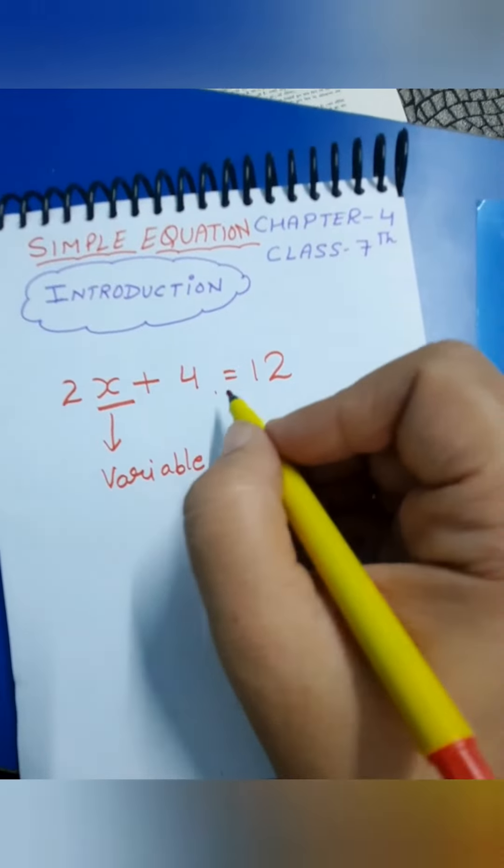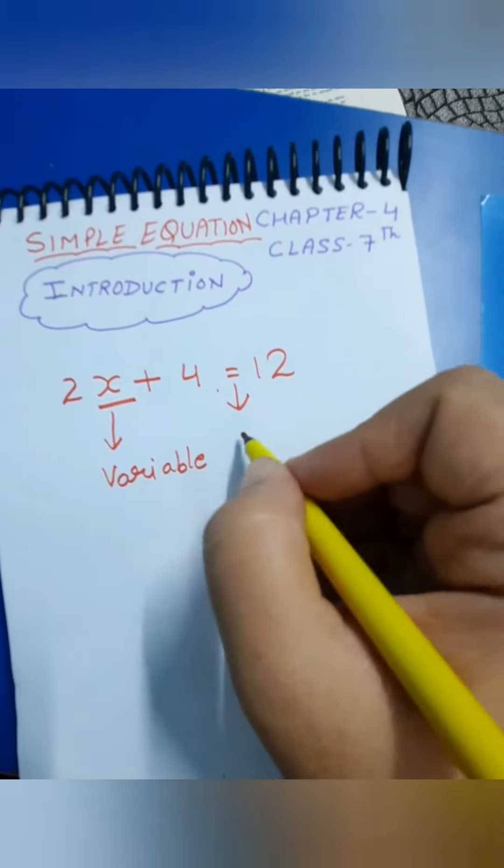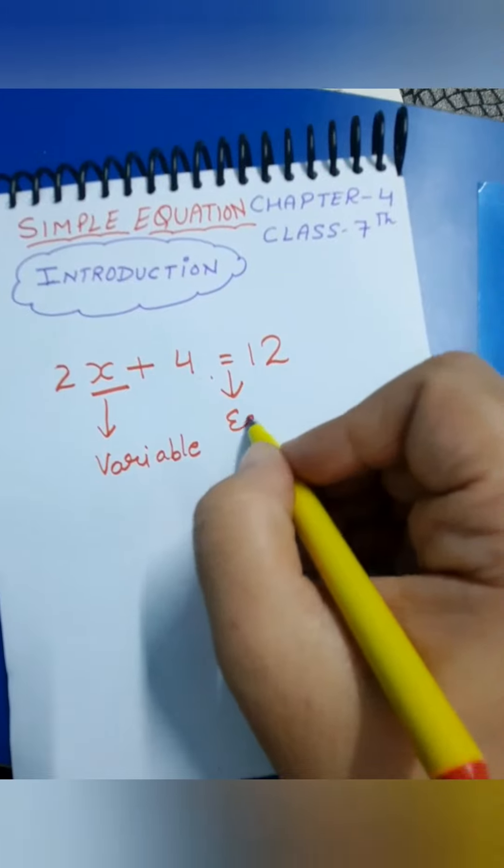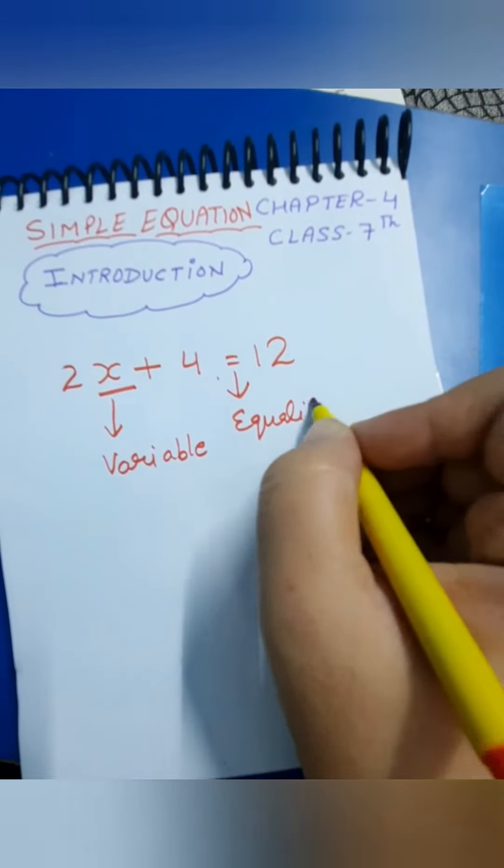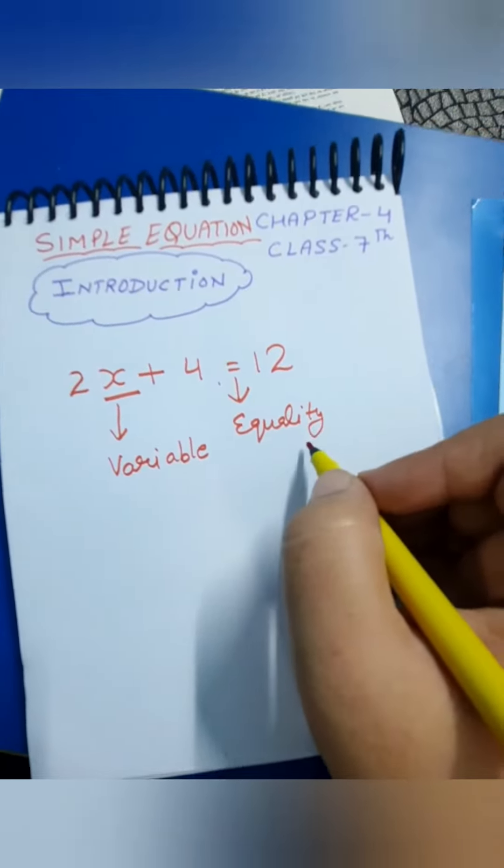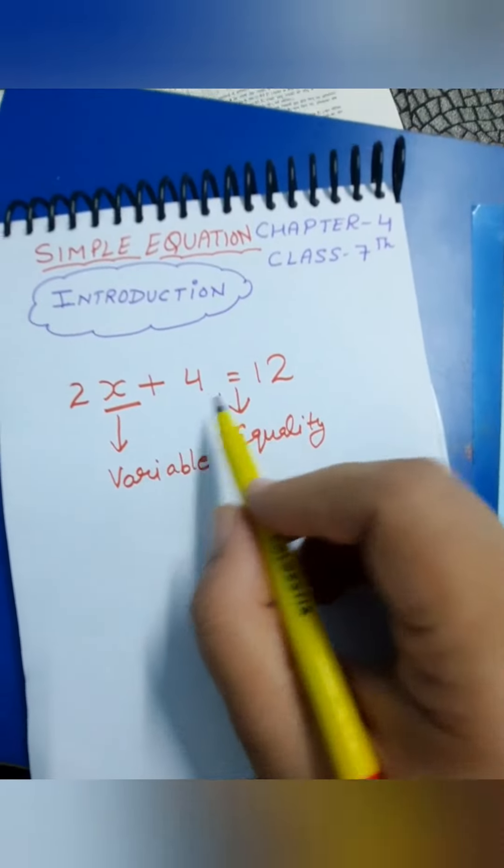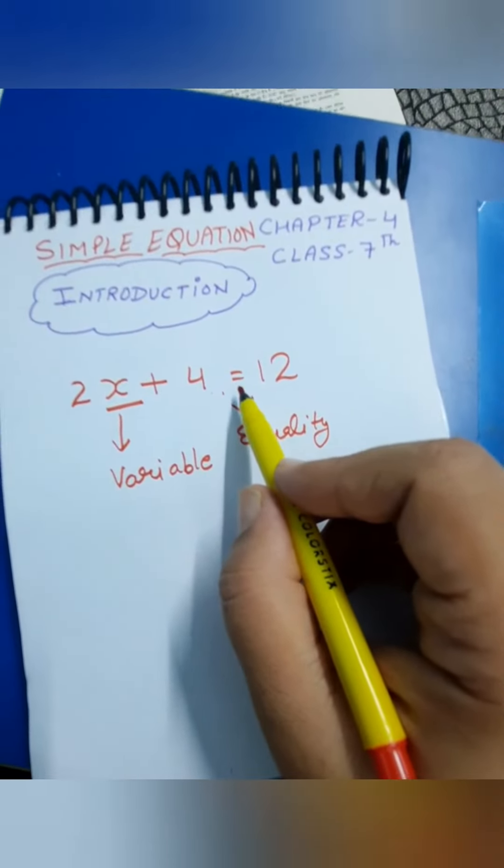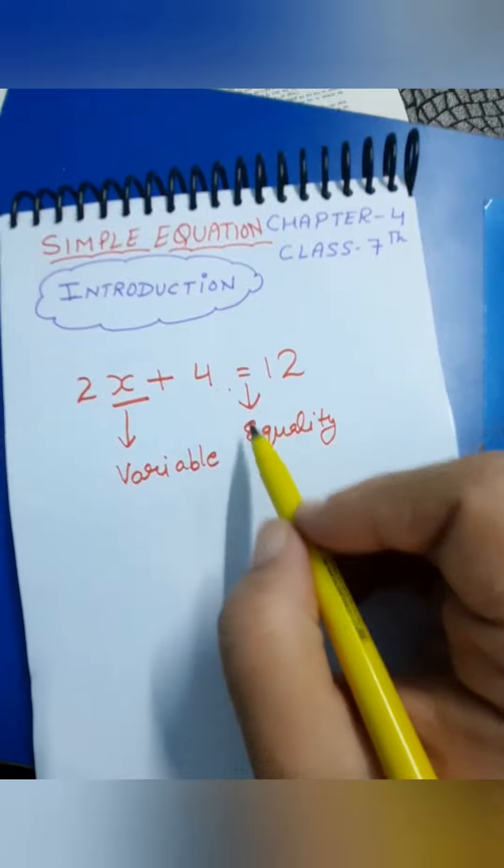And this is the sign which is called sign of equality, okay? Where there is a sign of equality is called a simple equation.